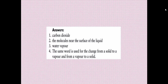Here are the answers. Number one: carbon dioxide — its chemical formula is CO2. Number two: the molecules near the surface of the liquid. Number three: water vapor — this is the name of the gas emitted after heating water. Number four: the same word is used for the change from a solid to a vapor and from a vapor to a solid.